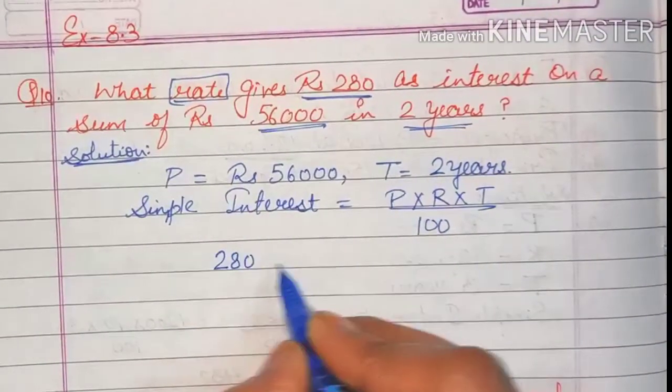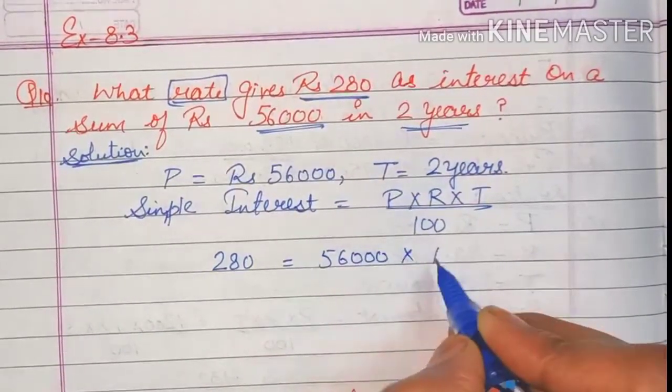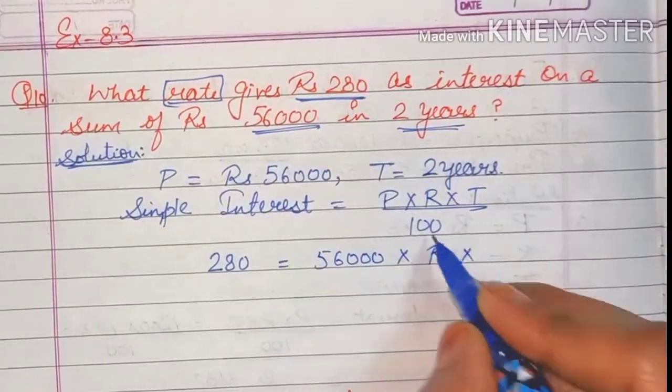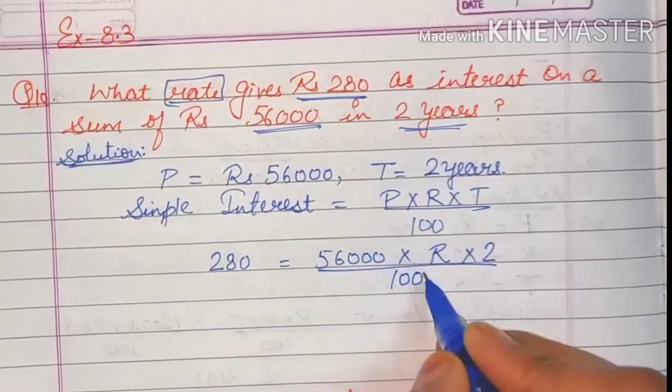Now simple interest we are given, that is rupees 280. Principal is given 56,000. Rate we are not given so we will write it as R, and time period we are given 2. We will simplify.